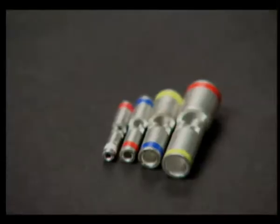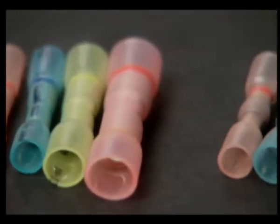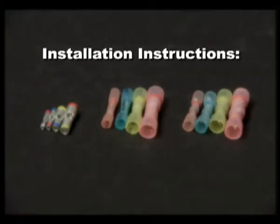These are available in non-insulated, sealed crimp connector line and our sealed crimp and solder line. Installation instructions for the sealed crimp step-down butt connector.